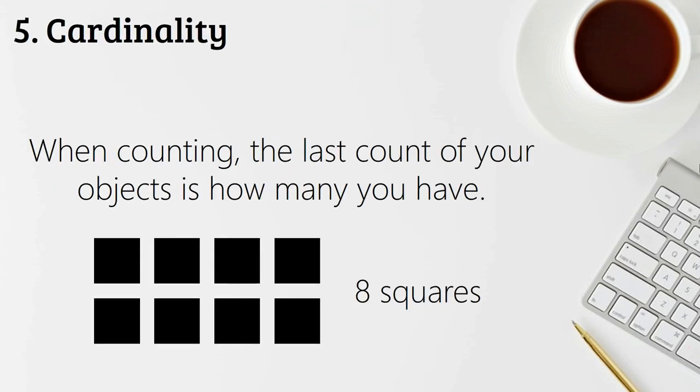Number five is cardinality. So cardinality is when you're counting the last count of your object is the number you have. So I count one, two, three, four, five on my fingers, for example. And I know that I have five because the last number I said is the number of my quantity.